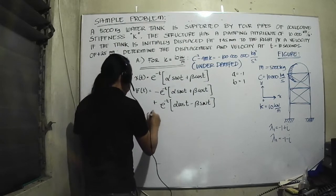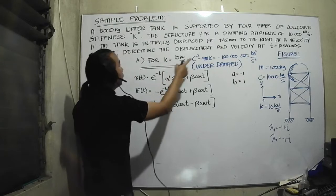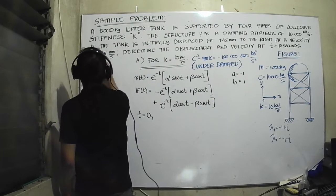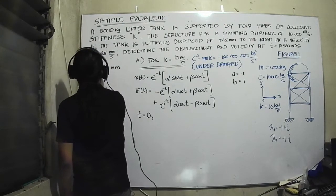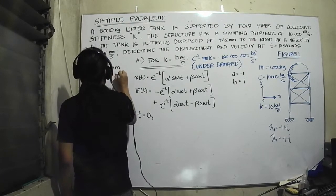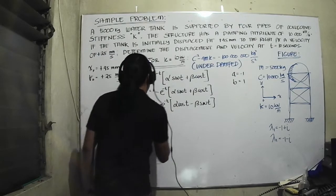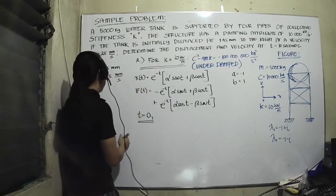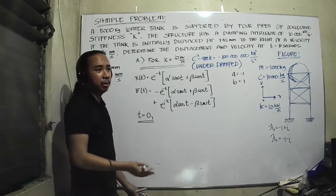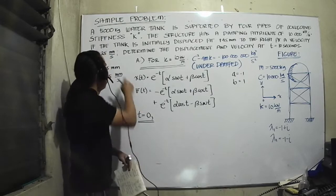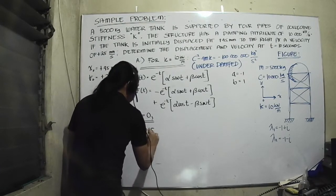Now we need to apply the conditions that when t is equal to 0, the initial displacement x0 is equal to plus 45 mm, and our initial velocity is equal to plus 25 mm per second. I want to keep my units consistent, so I'm going to be dealing with kilograms, meters, seconds. So 45 millimeters becomes 0.045 meters.